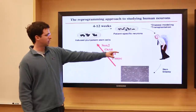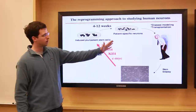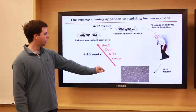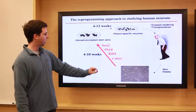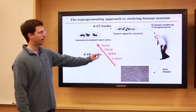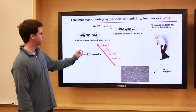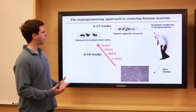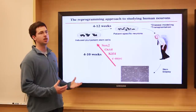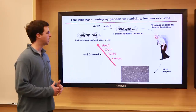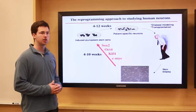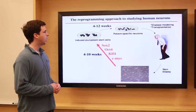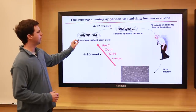You start with a skin biopsy from a patient suffering from any disorder you're interested in, culture those cells, and introduce these four transcription factors. The process of reprogramming these cells to the pluripotent state, where they act like embryonic stem cells, takes between four and ten weeks, and it's a little labor intensive and expensive.